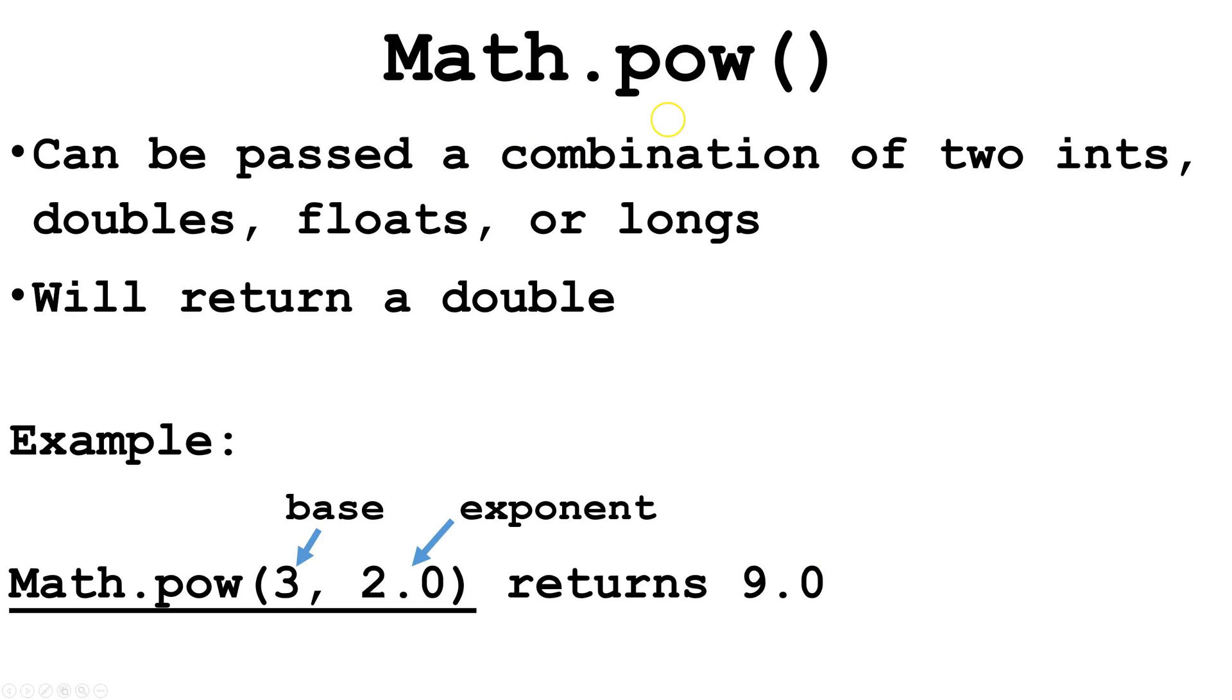Next, let's look at Math.pow. We can pass a combination of two ints, doubles, floats, or longs. We can mix and match those primitive types.